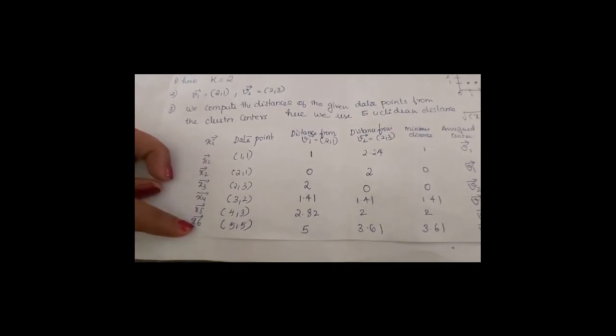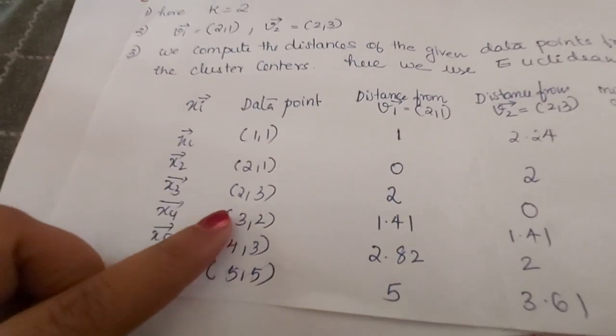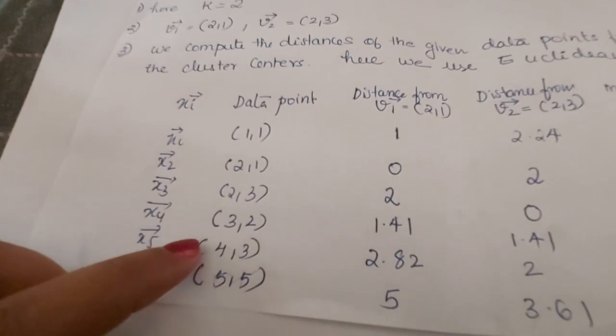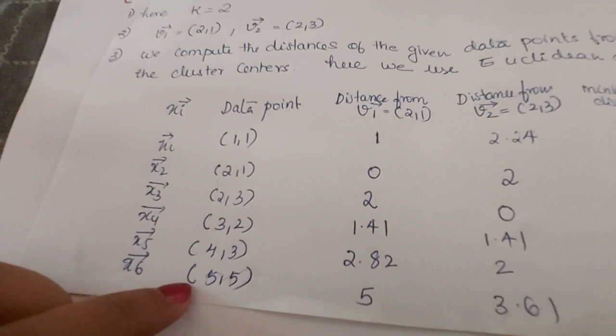We have six data points: x1=(1,1), x2=(2,1), x3=(2,3), x4=(3,2), x5=(4,3), x6=(5,5). These are entered in the first column of the table.